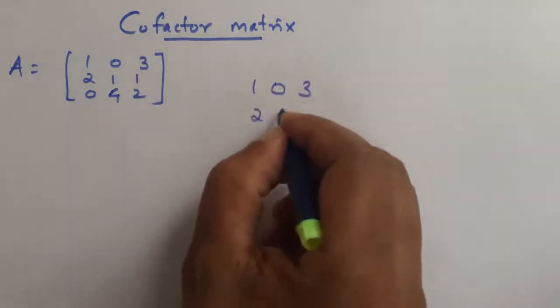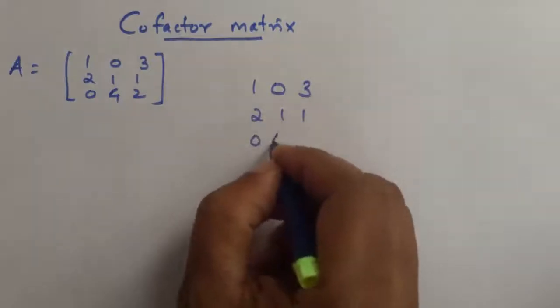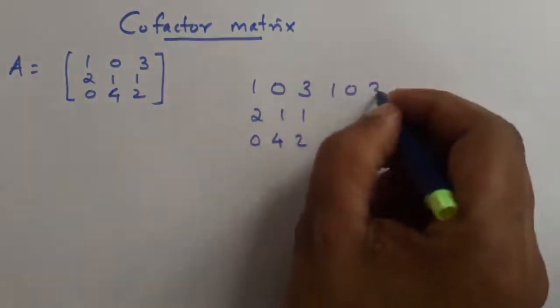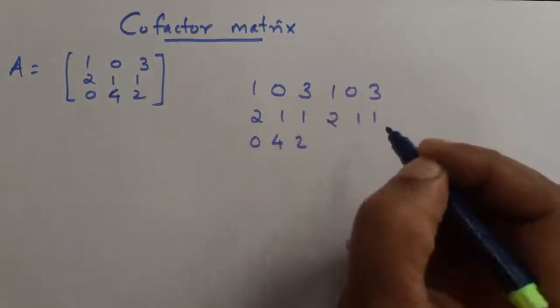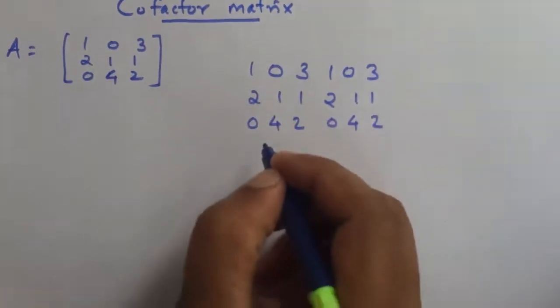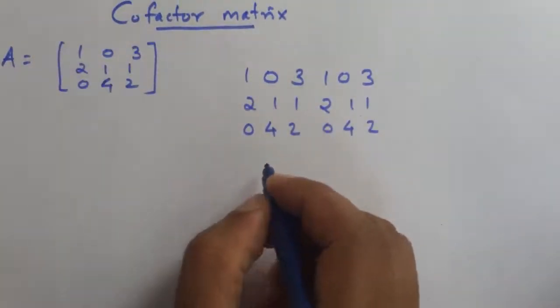Then we have to find cofactor. First, write the matrix 1 0 3 2 1 1 0 4 2, then again 1 0 3 2 1 1 0 4 2. Then we have to find...